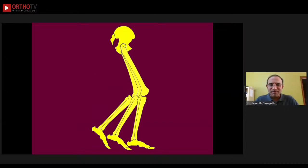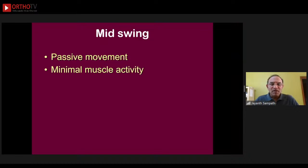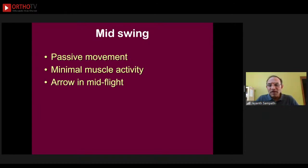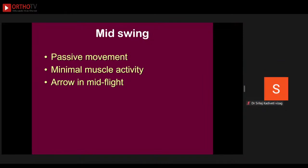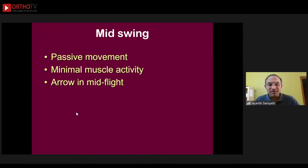Moving to mid-swing: the trailing limb is crossing the stance phase limb and moving ahead of it. This is largely a passive movement with minimal muscle activity — the momentum has already been given to the swing phase leg by the rapid powerful contraction of the iliopsoas. It is like an arrow in mid-flight: the archer has already given the power at the point of release, so the limb is just carrying through. The tibialis anterior continues to keep the foot in dorsiflexion.